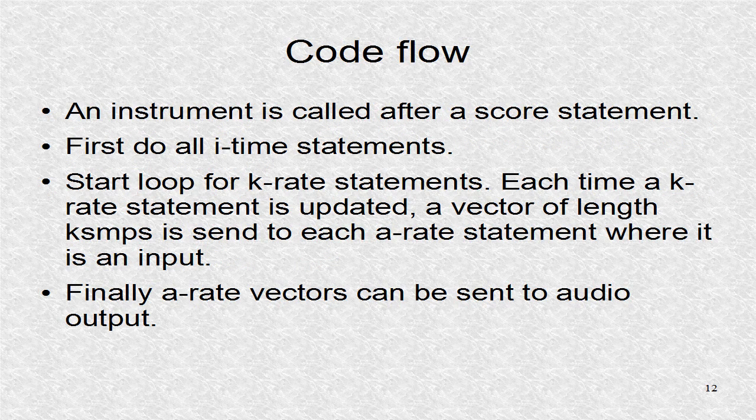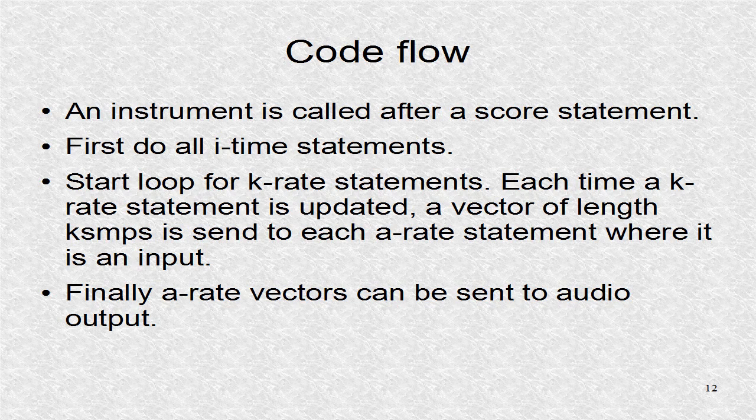All the instrument lines are in one block of statements. Even though the statements inside these blocks might seem to be executed one after another, they are not, and loops are implied depending on the prefixes of the result variables. First, all i-time statements are done. Next, a loop is started for k-rate statements. During each k-rate loop, a vector, that is, an array, of length ksmps is calculated for each array variable. Thus, if kr is 10 times lower than sr, the vector length, ksmps, is ten. Any array variable may be sent to the audio output.